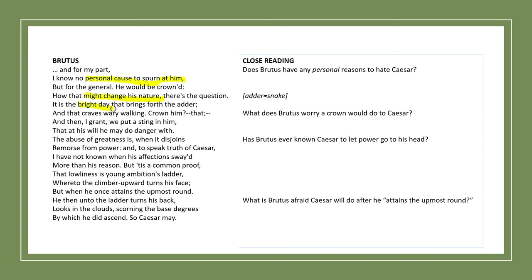'Crown him that, and then I grant we put a sting in him.' Here he's feeling we're going to change him. 'That at his will he may do danger with.' So once he becomes king, he can do what he wants at his will, and he could do some dangerous things.